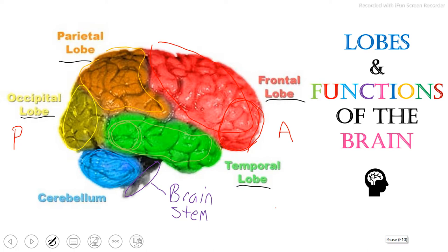Luckily, our brain is an amazing organ and we do not have to think about most of these functions to make them happen. That is it for the lobes and the functions of the brain. If you want to learn more about the anatomy of the inside of the brain or the cranial nerves, I'll link those videos down below. Please comment any questions you have in the comment section down below. I'll see you next time.